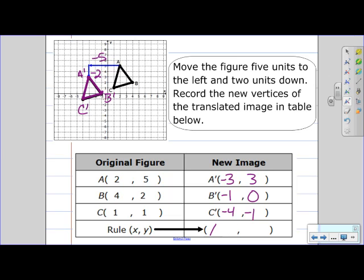So we have x. On the x-axis we are subtracting five. And on the y-axis we are subtracting two. So y minus two. And now we're done.